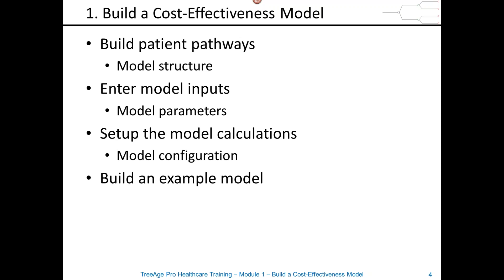The model configuration is pretty simple stuff about how you want to calculate this model — is it a cost-effectiveness model, a cost-only model, an effectiveness-only model? Do you have additional outcomes? Different parts of the model configuration make sure the model calculates the way you designed it to. Then we do a modeling exercise where we try to get you to independently build a model to consolidate everything you've learned in the morning, and that pretty much takes us to lunch. There are two long exercises in the course — one for decision trees and one for Markov models — and they're really important to get you doing it on your own to make sure you hold on to those skills.